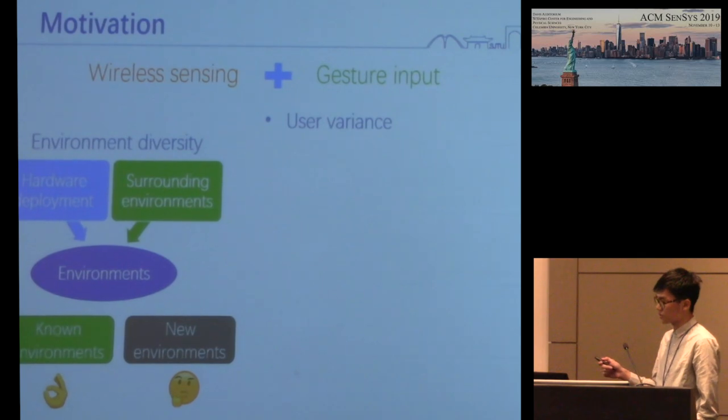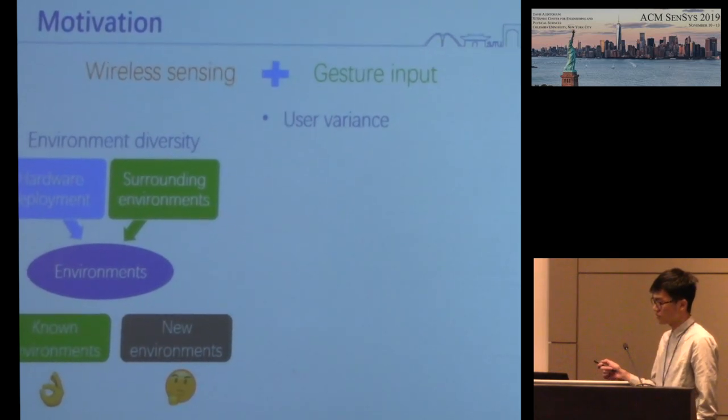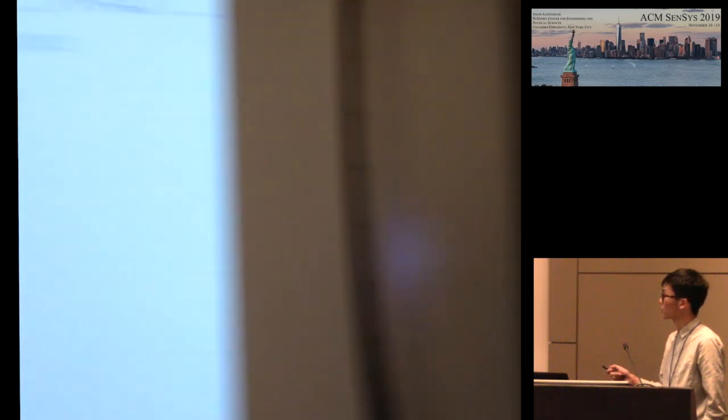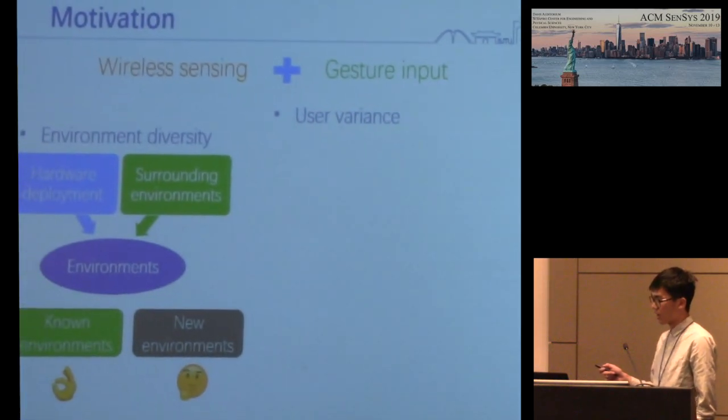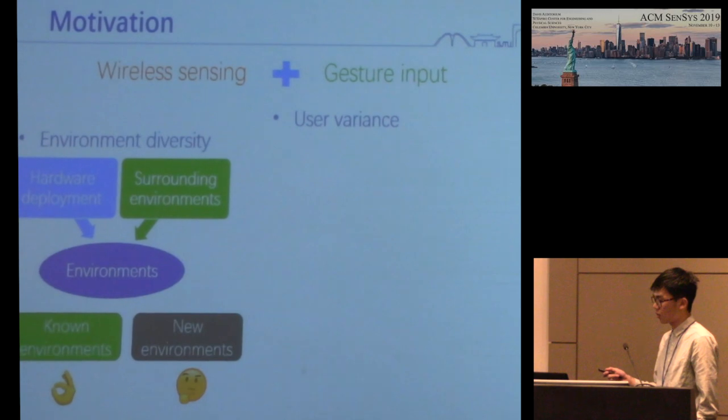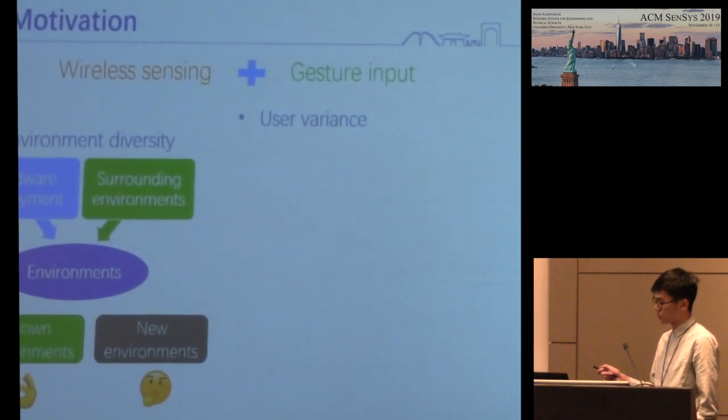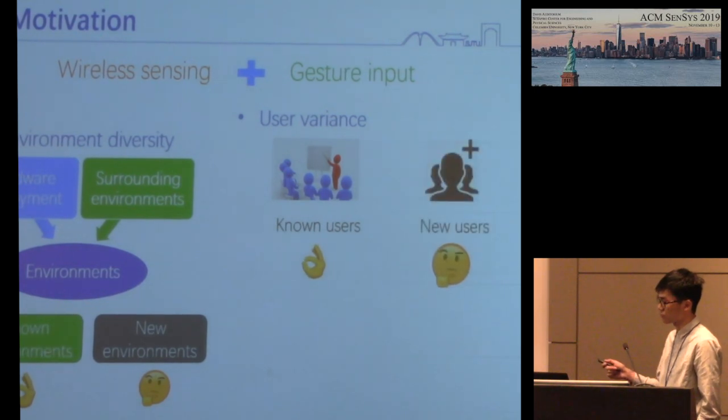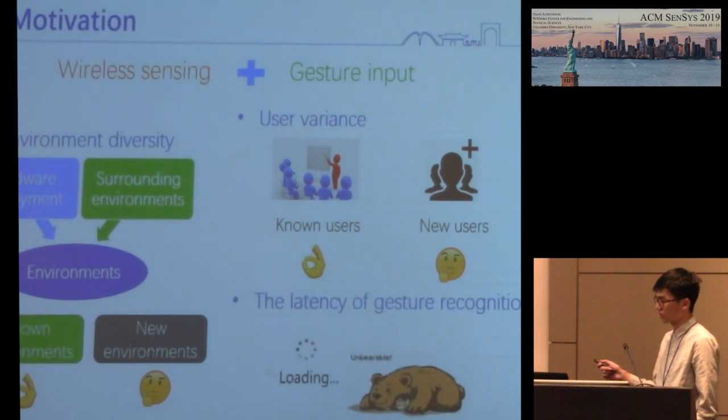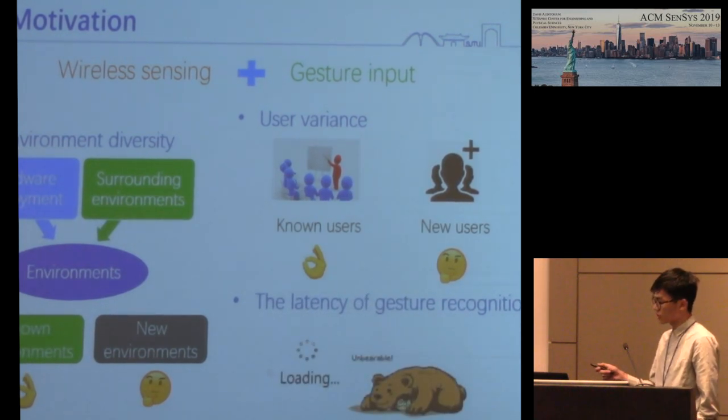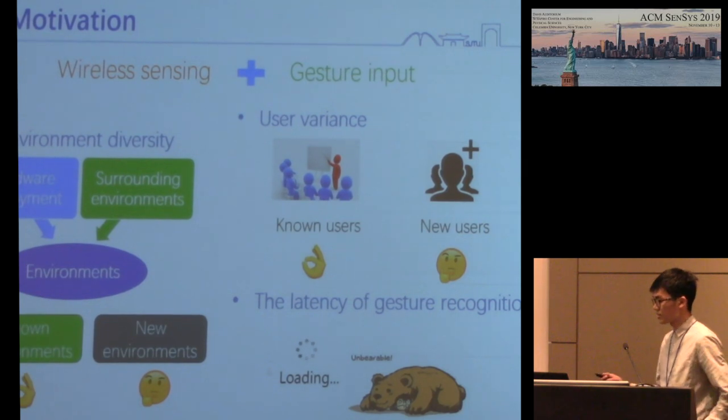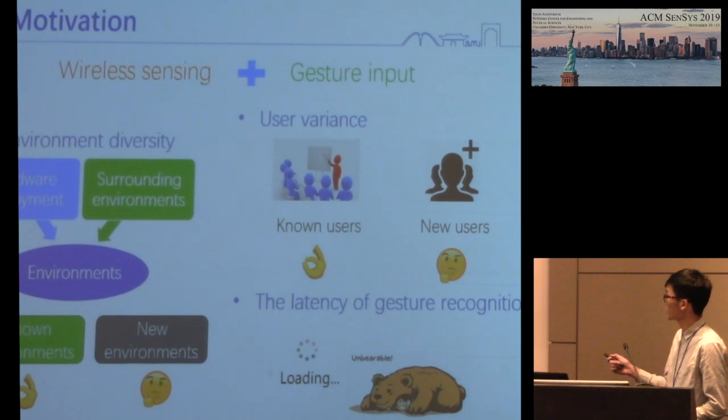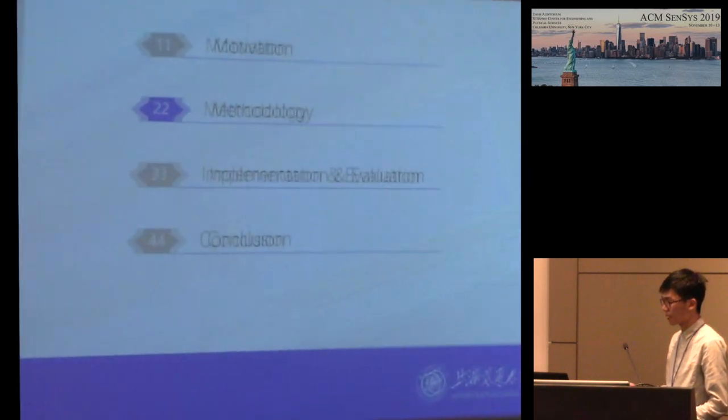Similar to environment diversity, user diversity is also a challenging issue. Different people have different height, weight, body shape, and they also have different gesture performing habits. The performance of user-dependent methods will decrease greatly when a new user is using the system. Moreover, a number of recent works on gesture detection are designed for recognizing gestures after they are completed, so the latency between gesture completion and recognition cannot be avoided.